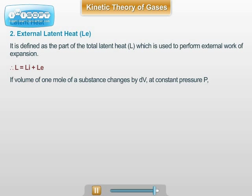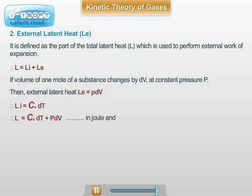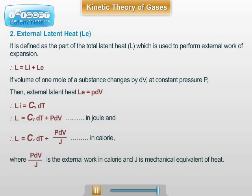If the volume of one mole of substance changes by dV at constant pressure P, the external latent heat Le is given by P dV. Also, the work done against the internal forces is the rise in internal energy. Thus, Li equals Cv dT. Hence, L can be written as the sum of Cv dT and P dV. If written in mechanical units, this is in Joules. In heat units, L equals (Cv dT plus P dV) upon J, where J is the mechanical equivalent of heat.